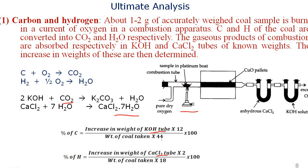In 18 g of water vapor, there are 2 g of hydrogen. From the increase in weight of the calcium chloride tube due to water vapor entry, we calculate the percentage of hydrogen. In 44 g of CO₂, there are 12 g of carbon. From the increase in weight of the KOH tube due to CO₂ entry, we calculate the percentage of carbon. These are the two most important elements deciding the calorific value.